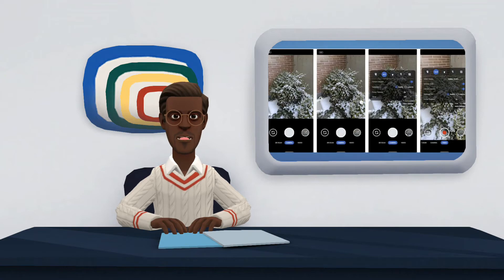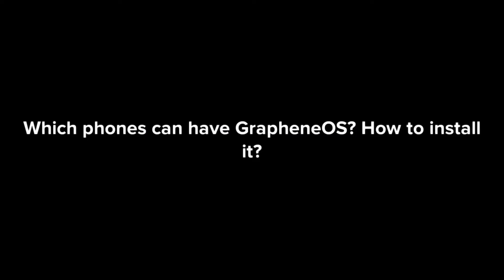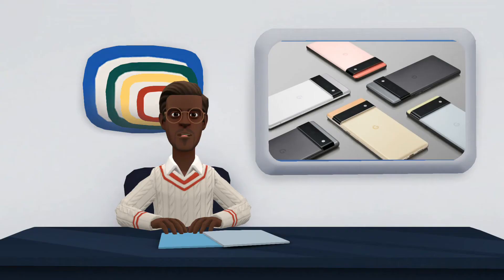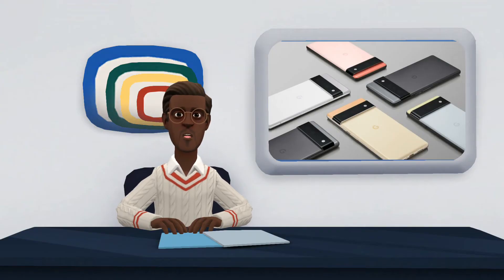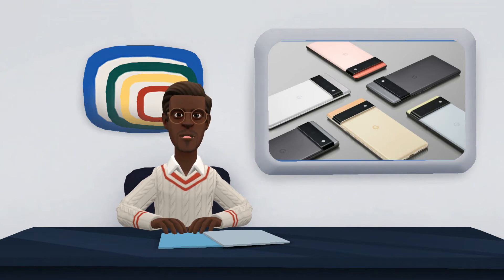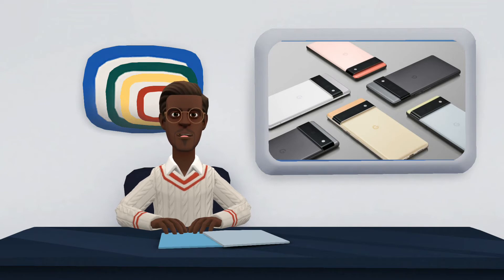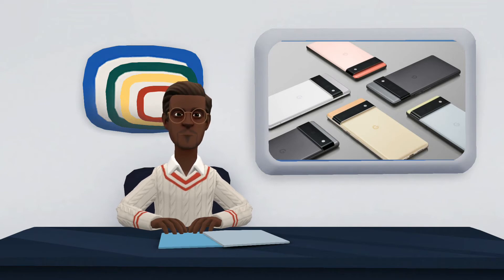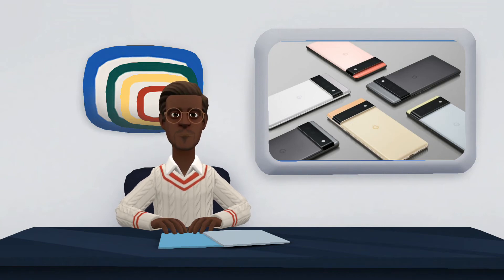However, because it only runs on Pixel phones — although it's possible to install the software on other smartphones, only Google Pixel phones correctly support the privacy and security standards required by Graphene OS. The list of compatible models includes: Pixel 6 Pro, Pixel 6, Pixel 6a, Pixel 5a, Pixel 5, Pixel 4a, Pixel 4 XL, Pixel 4, Pixel 3a XL, and Pixel 3a.